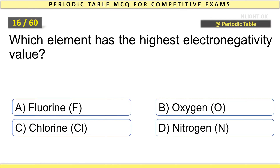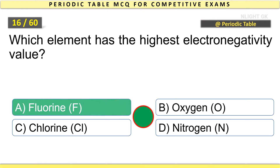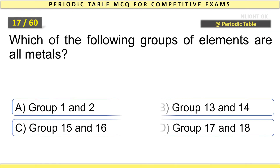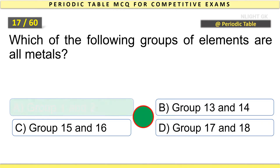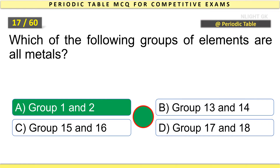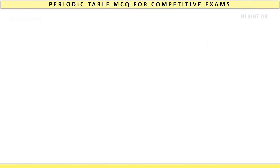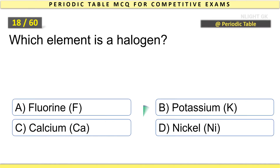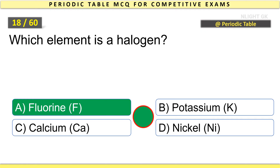Which element has the highest electronegativity value? Fluorine. Which of the following groups of elements are all metals? Fluorine.